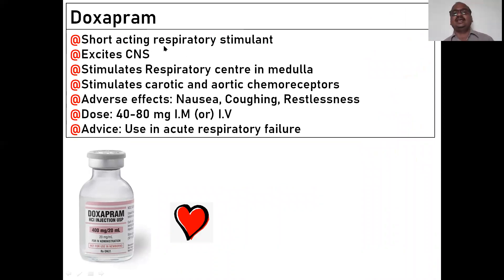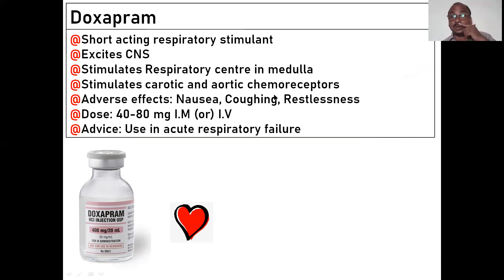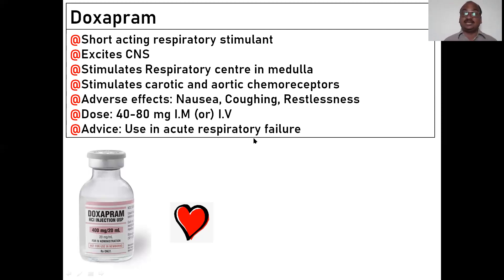Doxapram is a short-acting respiratory stimulant — it kicks in immediately. It excites the central nervous system and stimulates the respiratory center in the medulla. It stimulates the carotid and aortic chemoreceptors. Adverse effects include nausea, vomiting, coughing, and restlessness because the CNS is being stimulated and you always feel active and restless. It is used in acute respiratory failure — whenever the respiratory system fails, you can give Doxapram.